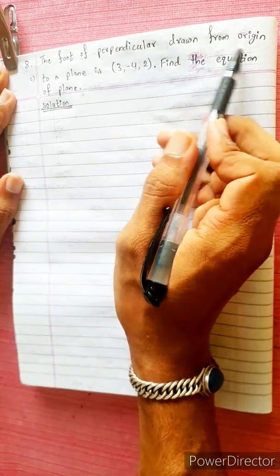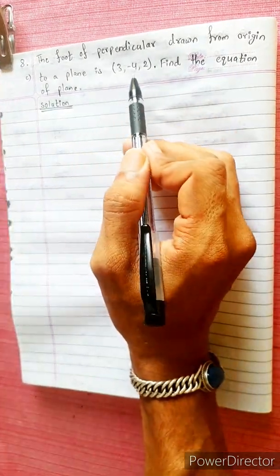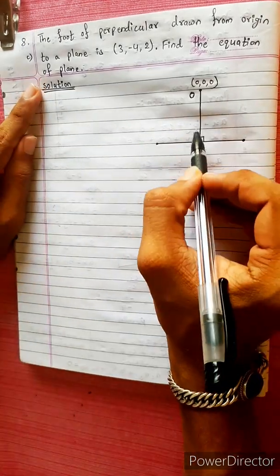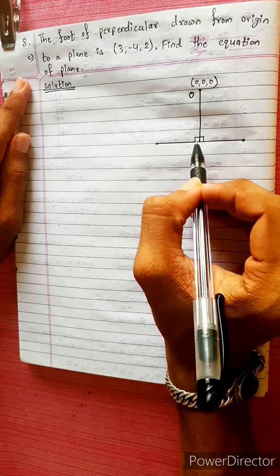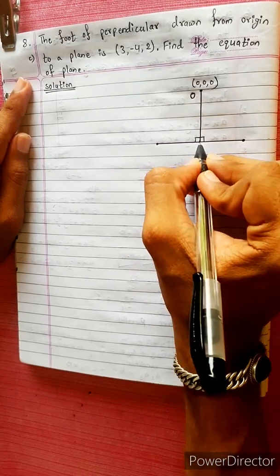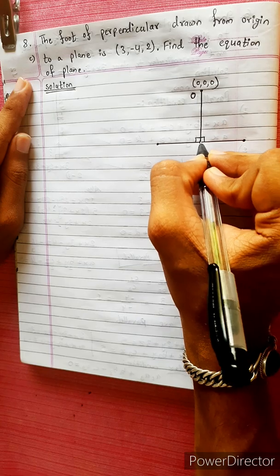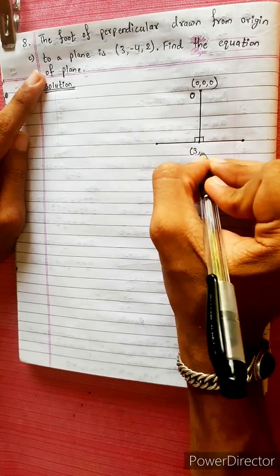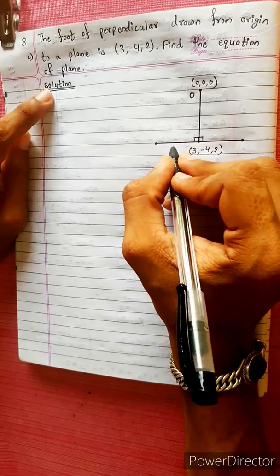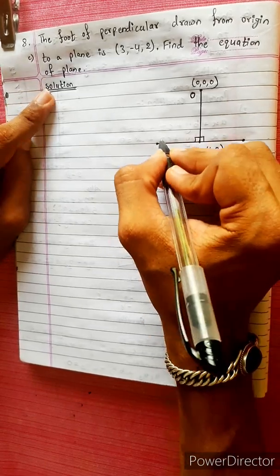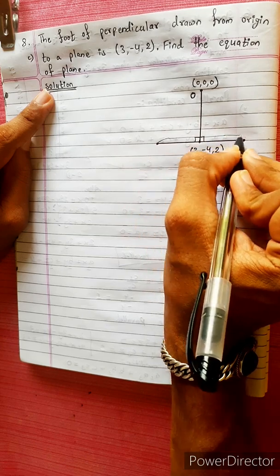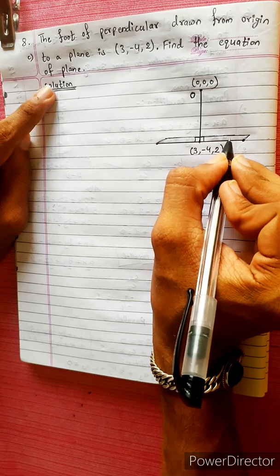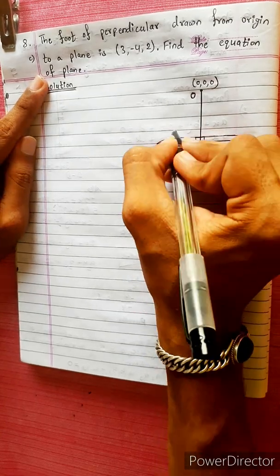The foot of perpendicular drawn from the origin to a plane is the point (3, 4, 2). We have to find the equation of the plane. This is the figure of the plane — the origin and the foot of the perpendicular on the plane. This is the point 3, 4, 2. This is the equation of the plane we have to find.